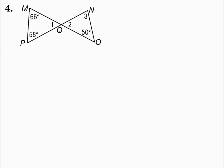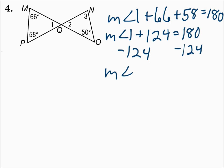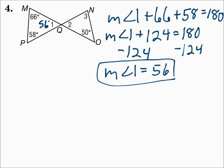Number four: find the measures of angles one, two, and three. On the left-hand triangle, we know two angle measures, so let's start there. Those three angles add up to 180: angle one + 66 + 58 = 180. 66 + 58 = 124, so the measure of angle one is 56. Angle one and angle two are vertical angles, so they have the same measure — angle two is also 56 degrees.